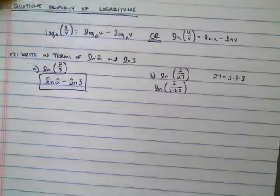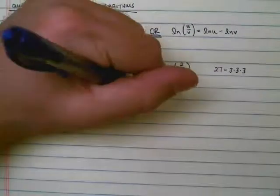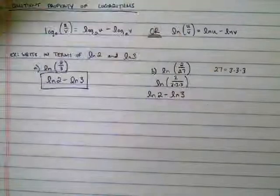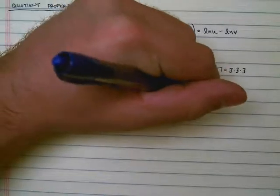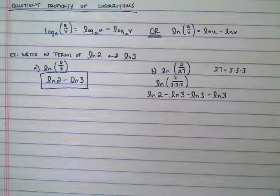Now those 3s are all on the bottom of the fraction, which means I could say that is ln 2 minus ln 3 minus another ln 3 minus another ln 3. Three 3s on the bottom.